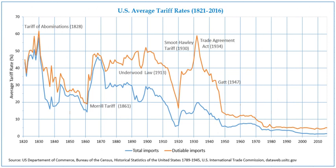Ricardo assumed that the reasons for the immobility of capital would be 'the fancied or real insecurity of capital when not under the immediate control of its owner, together with the natural disinclination which every man has to quit the country of his birth and connections, and entrust himself with all his habits fixed to a strange government and new laws.' Neoclassical economists, for their part, argue that the scale of movements of workers and capital is negligible. They developed the theory of price compensation by factor that makes these movements superfluous.